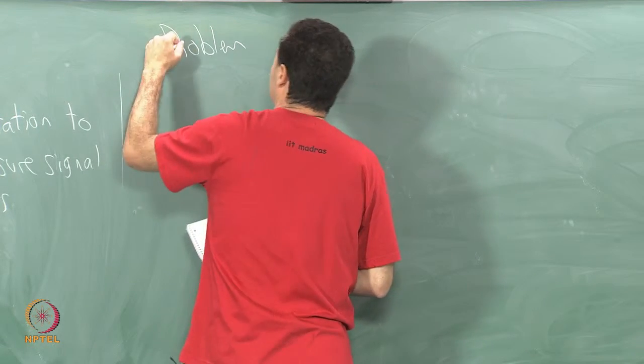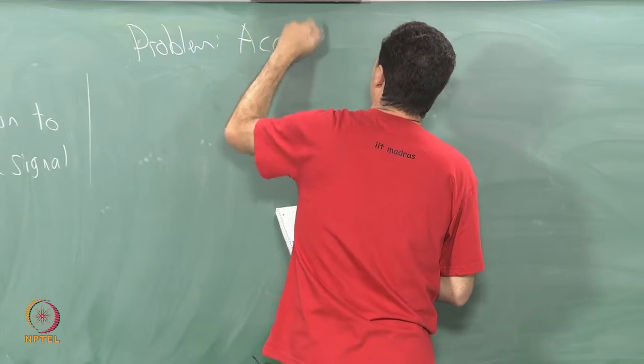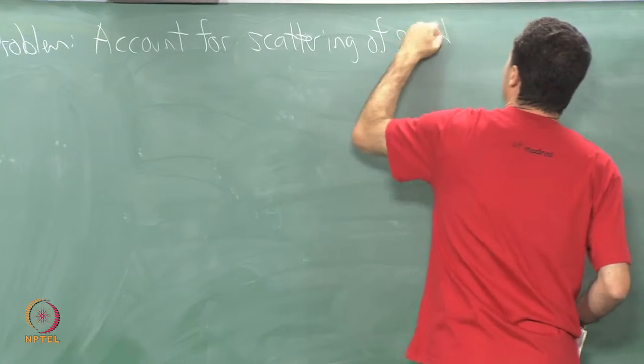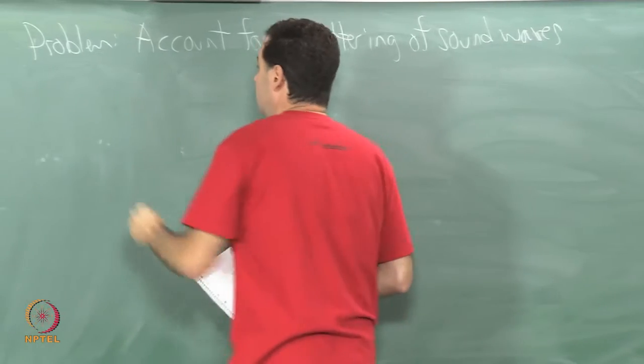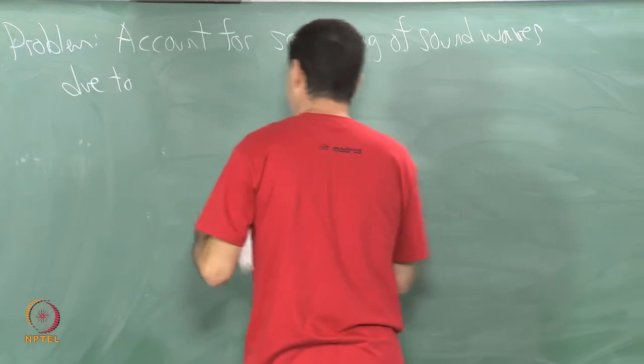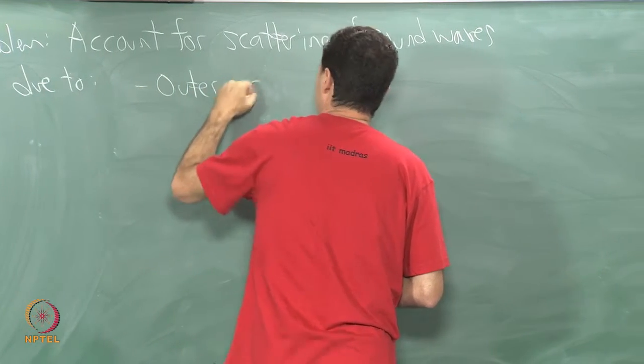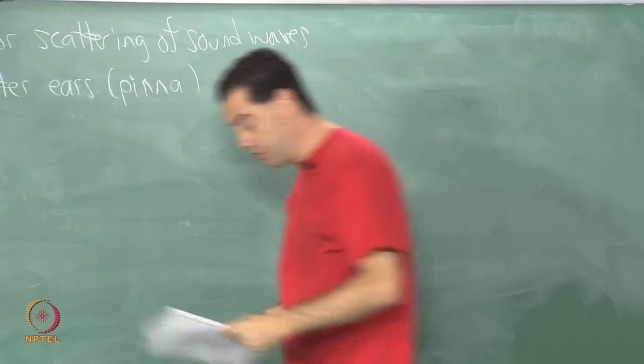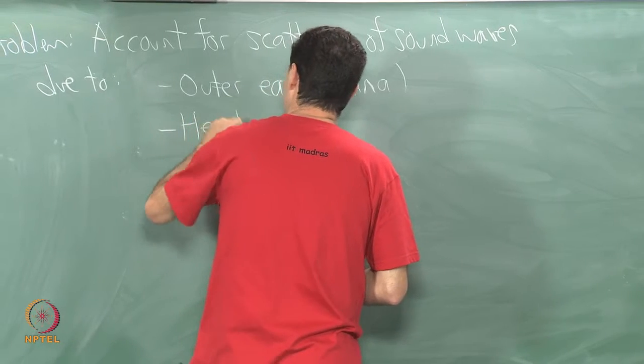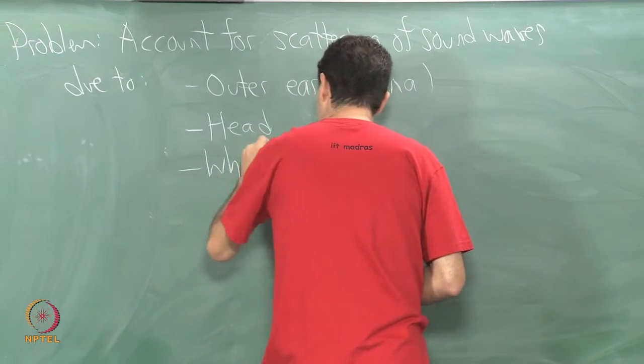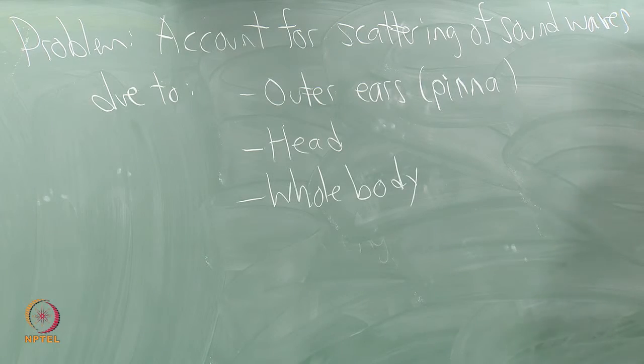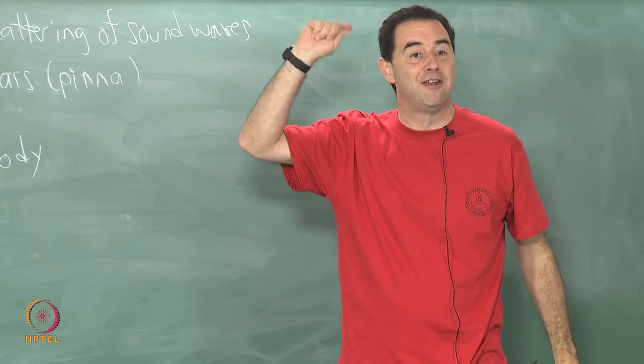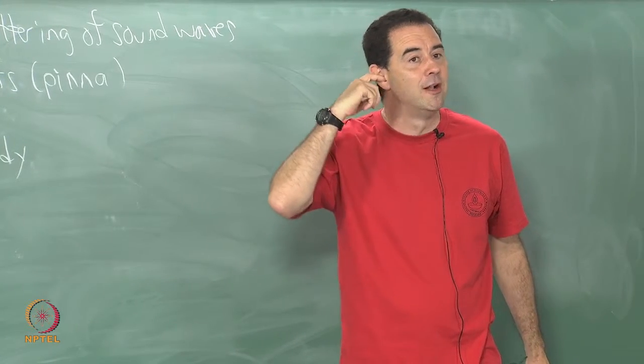The problem becomes account for scattering of sound waves due to the outer ears, that part which I called the pinna and the canal as well that goes into your inner ear. What about the shape of your head, your whole body? It could even be scattering of sound based on what clothes I am wearing today and maybe it is different from day to day. Could be different based on whether or not I am wearing a hat.